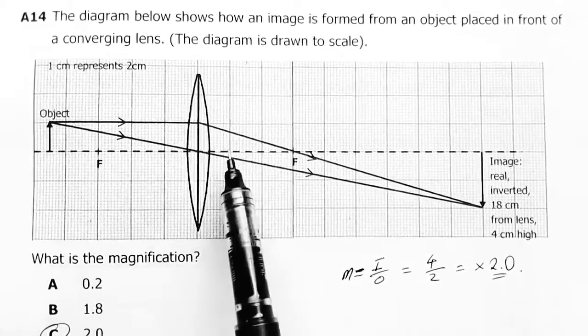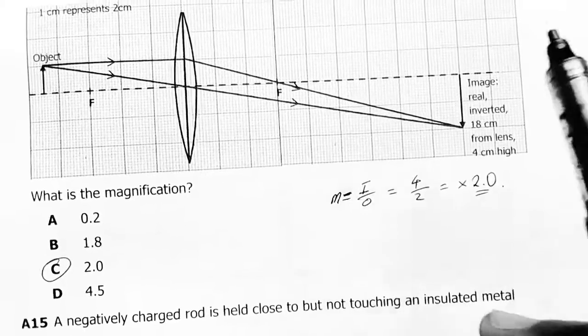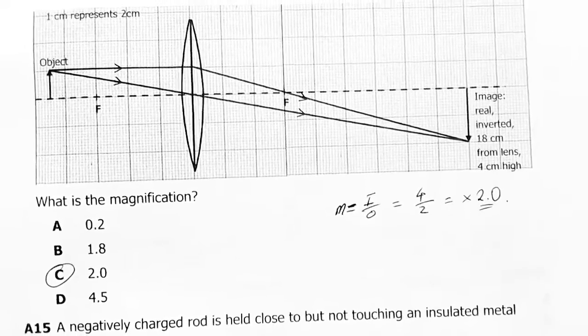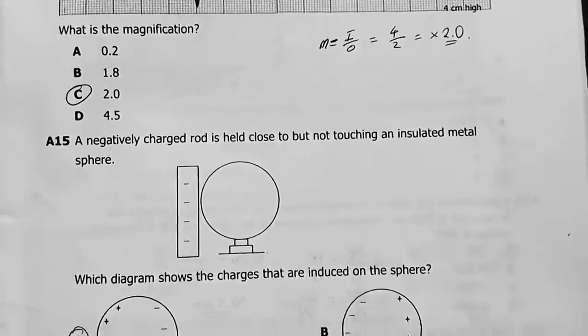Therefore, this is actually 9. So 18 over 9 will still give you a 2 for linear magnification. So sometimes you may not have the size of the image and object, but you still have the linear distances, the linear ratios.